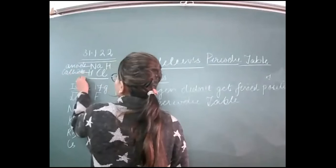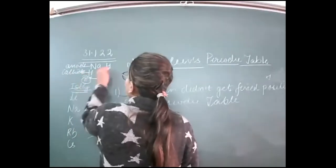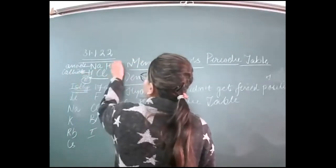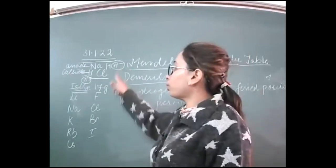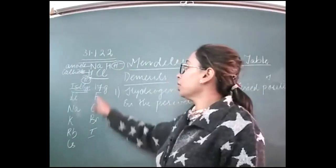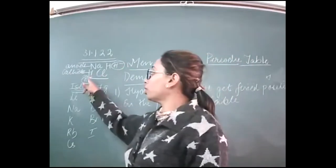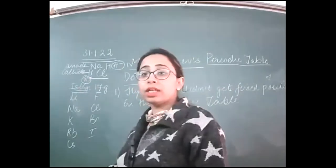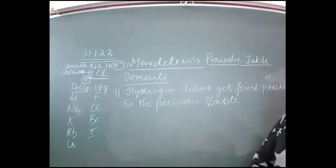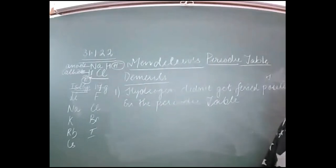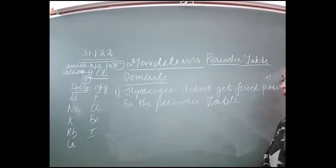When hydrogen gains an electron it forms H-negative, and H-negative is a property of halogens. So hydrogen can also behave like a halogen. This dual nature — resembling both alkali metals and halogens — means hydrogen couldn't get a fixed position in the periodic table. This is a drawback of the Mendeleev periodic table.